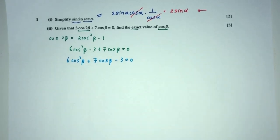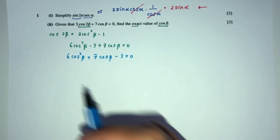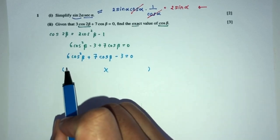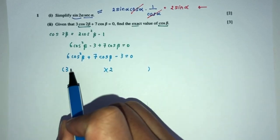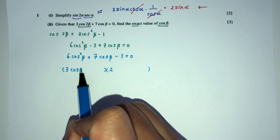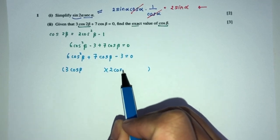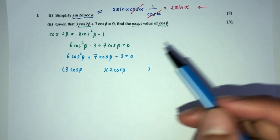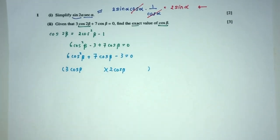So first thing first, let's rearrange. You will have 6 cos² β + 7 cos β - 3 = 0. As you can see, this one seems to be a simple quadratic equation. We can factorize to solve this. Now what is 6? 6 is 3 times 2. Now we need to get the value of plus 7.